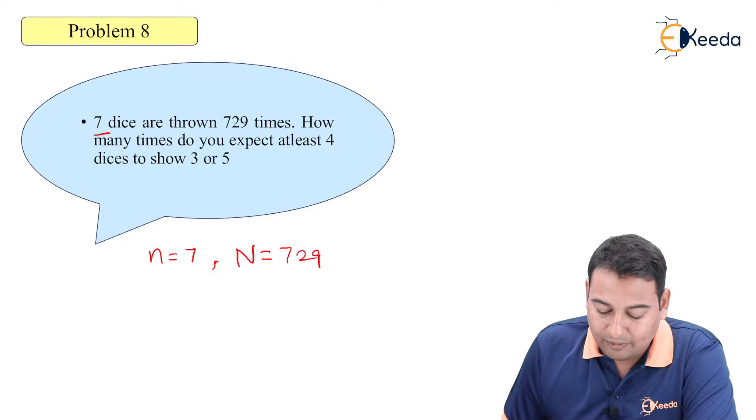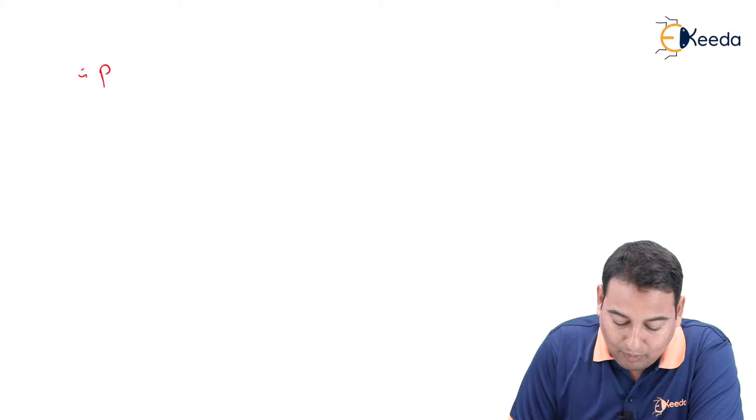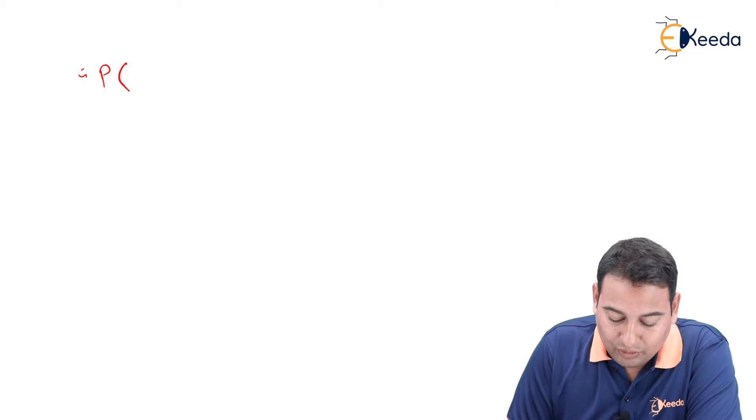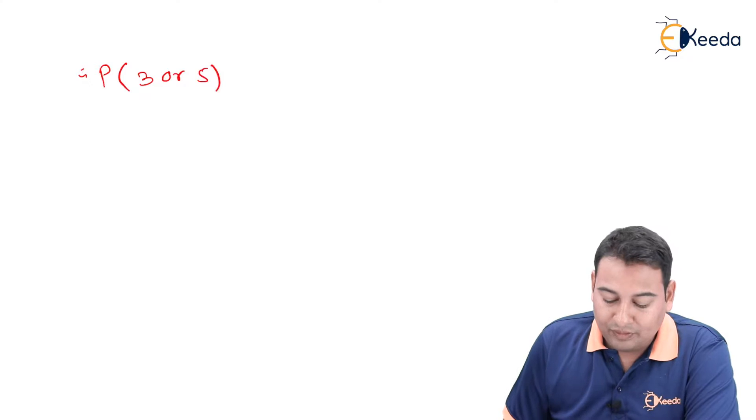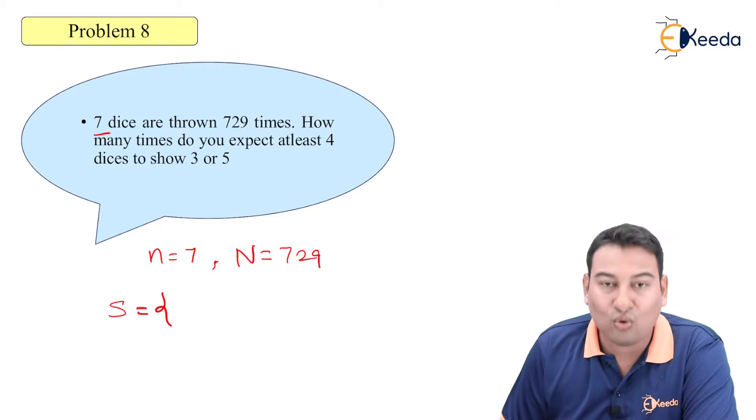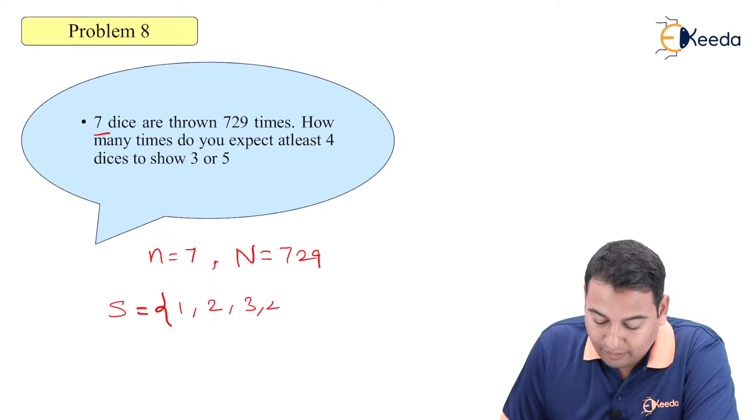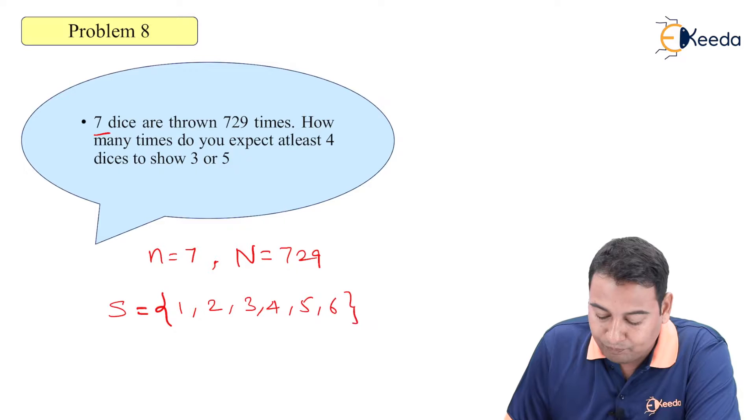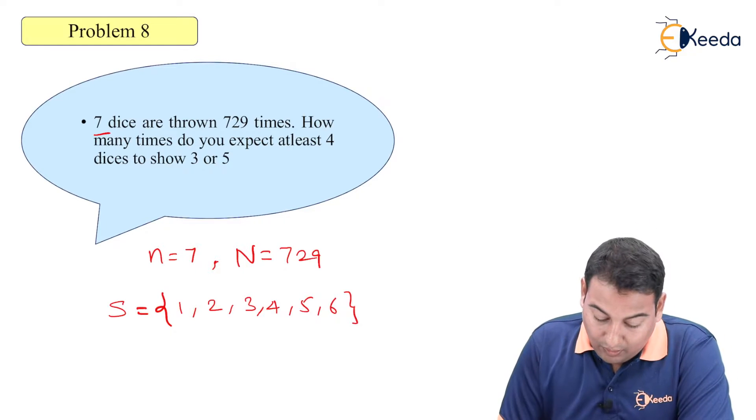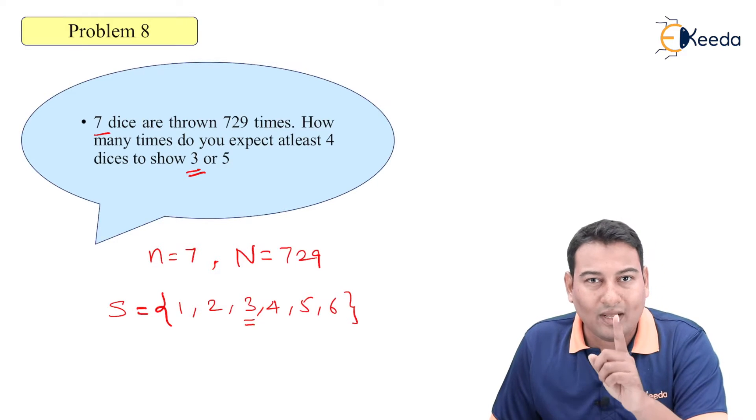at least four dice to show three or five? Here, the probability of success is showing three or five. Friends, can you tell me what is the sample space? If you throw a dice, in the sample space you will be getting 1, 2, 3, 4, 5, and 6. What is the probability of three? Three has occurred once out of